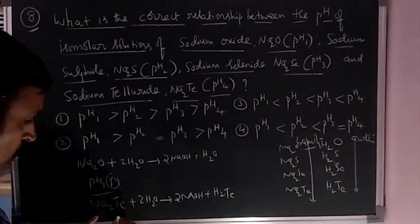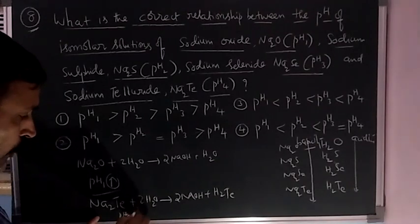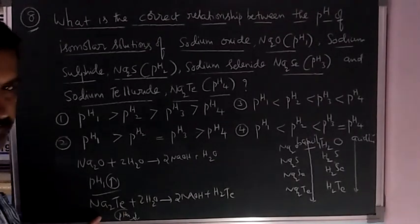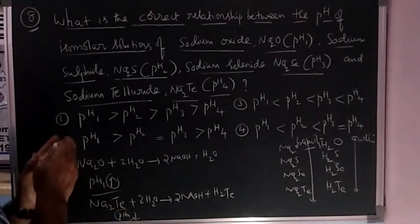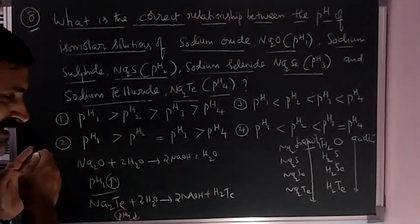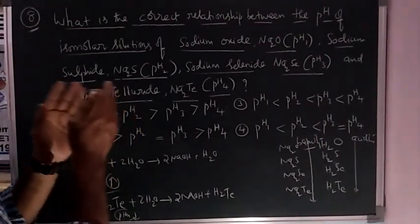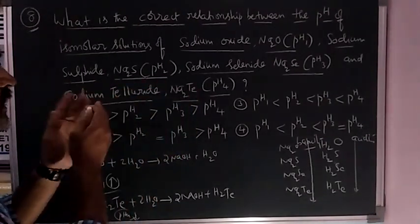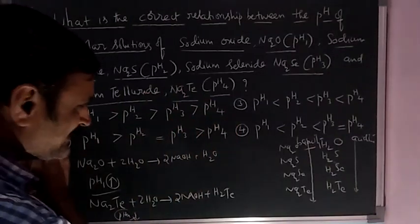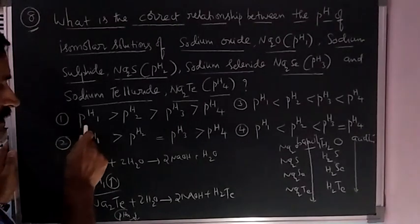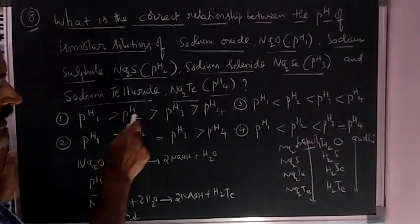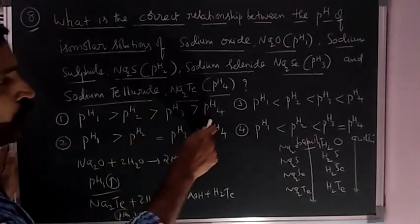Weak base means whose pH value, pH4, is very small. That means pH1 is big, pH4 is small. The pH values of Na2O, Na2S, Na2Se, and Na2Te decrease according to this concept. So it is nothing but pH1 is greater than pH2, which is greater than pH3, which is greater than pH4.